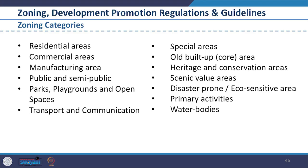Moving forward, the Development Plan should provide zoning regulations for proposed land use categories including residential areas, commercial areas, manufacturing areas, public and semi-public areas, parks, playgrounds and open spaces, transport and communications, special areas, old built-up core areas, heritage and conservation areas, scenic value areas, disaster-prone or eco-sensitive areas, primary activities, and water bodies. In the planning proposal and recommendation of the Development Plan, the Bhopal Development Plan bases its proposals on a pragmatic approach perceived to bring a remarkable model shift in how the city of Bhopal is planned.